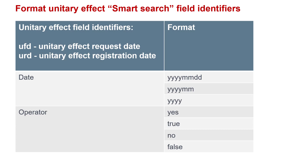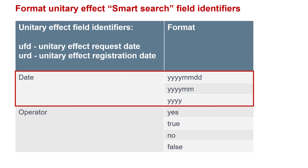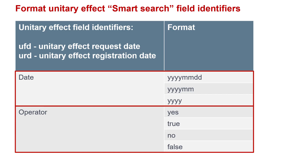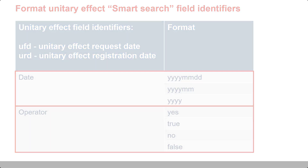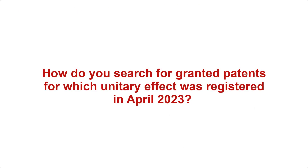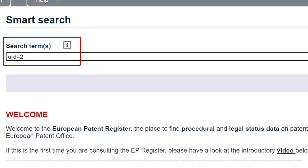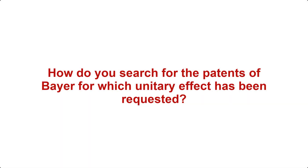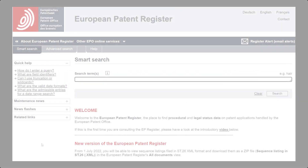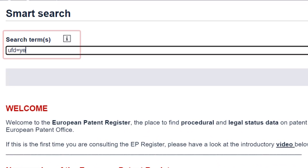As with the advanced search, you can enter the field identifiers followed either by a date — the year, month, and day; the year and month; or the year — or by the operator Yes, True, or No, False. So, how do you search for granted patents for which unitary effect was registered in April 2023? Easy. You just enter URD equals 2023-04 and press Enter to run the search. And next, how do you search for the patents of Bayer for which unitary effect has been requested? You enter UFD equals Yes and PA, which stands for Applicant or Proprietor, equals Bayer, and press Enter to run the search. Easy, don't you think?